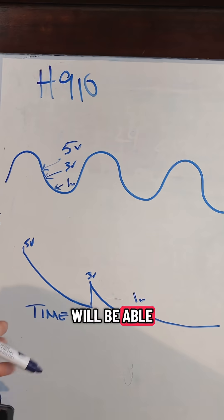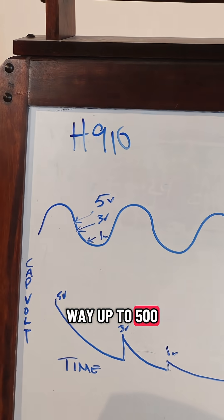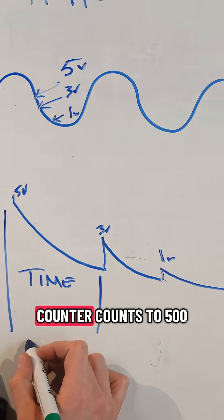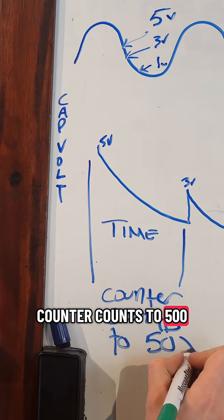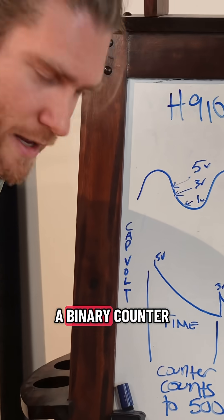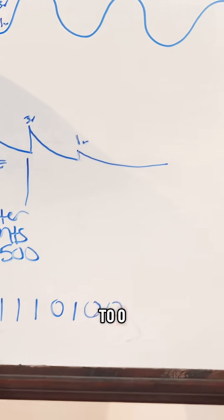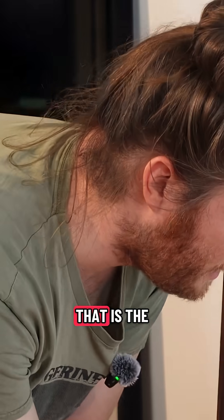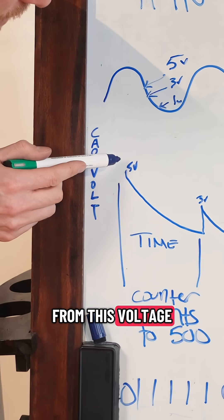The counter will be able to count from 0 all the way up to 500. Our counter is a binary counter, so it is able to count to 1,1,1,1,1,0,1,0,0 — that is the highest that it is able to count to in this amount of time from this voltage.